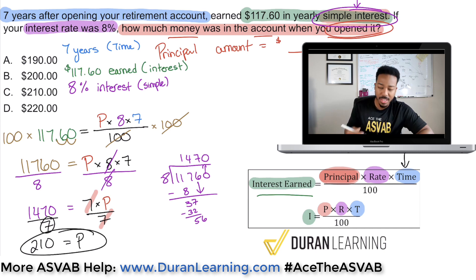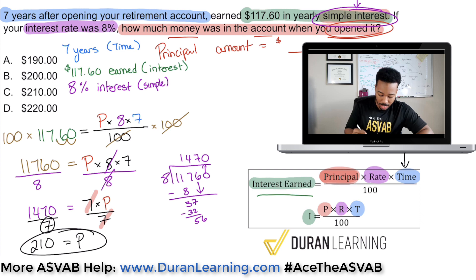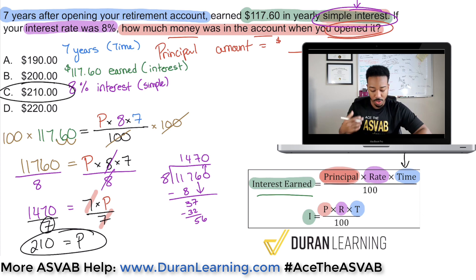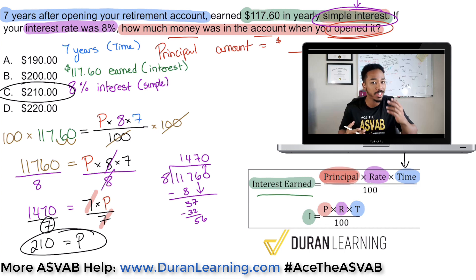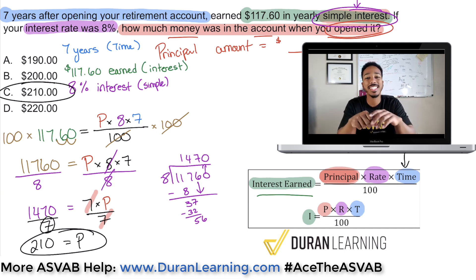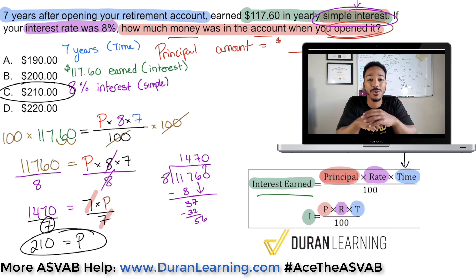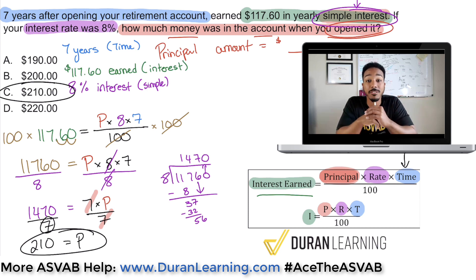P — remember, that was your principal amount. And so therefore, the answer is C: $210 is what was in the account when you started. So with that said, my ASVAB party people, I hope you guys enjoyed this question. I'll see you guys in the next video.